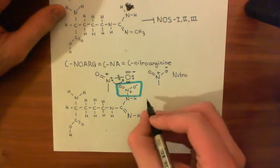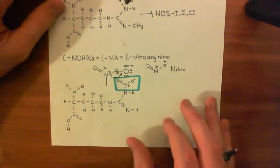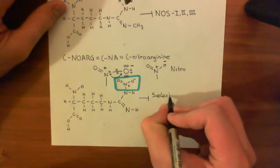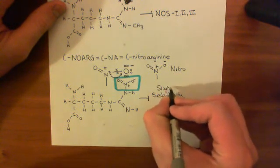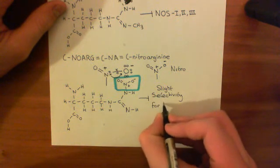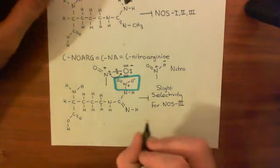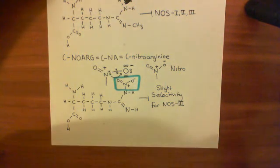L-nitro-arginine is pretty unselective; however, it does have slight selectivity for NOS3, or eNOS — the NOS isoform found in high amounts in endothelial cells. We'll cut this video here and continue our discussion of pharmacological ways of blocking the NOS enzymes in the next video.